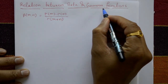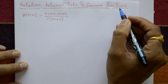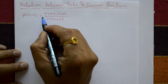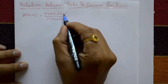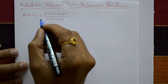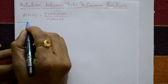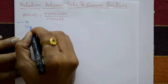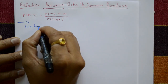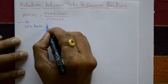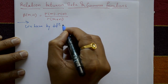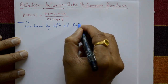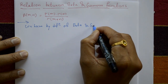We will show the relation between the Beta and Gamma functions. We need to prove that Beta(m,n) is equal to Gamma(m) times Gamma(n) divided by Gamma(m+n). The solution is very simple — we proceed by using the definitions of the Beta and Gamma functions.